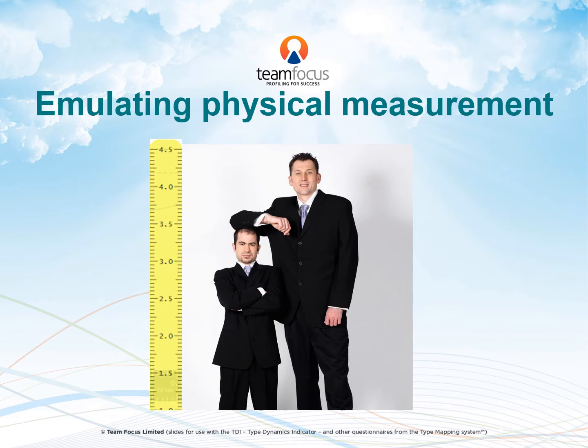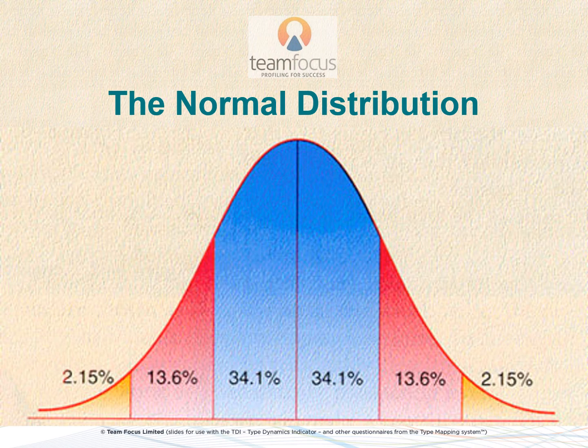Let me begin with the basics for understanding all of these scales. We assume that when we measure psychological attributes, they will follow similar patterns to other more physical attributes like height or weight. When we measure these, we find that we get very few short people and very few very tall people. Most people cluster around the middle — the average height. We find in fact that they follow what is called the normal distribution, and the normal distribution looks like this.